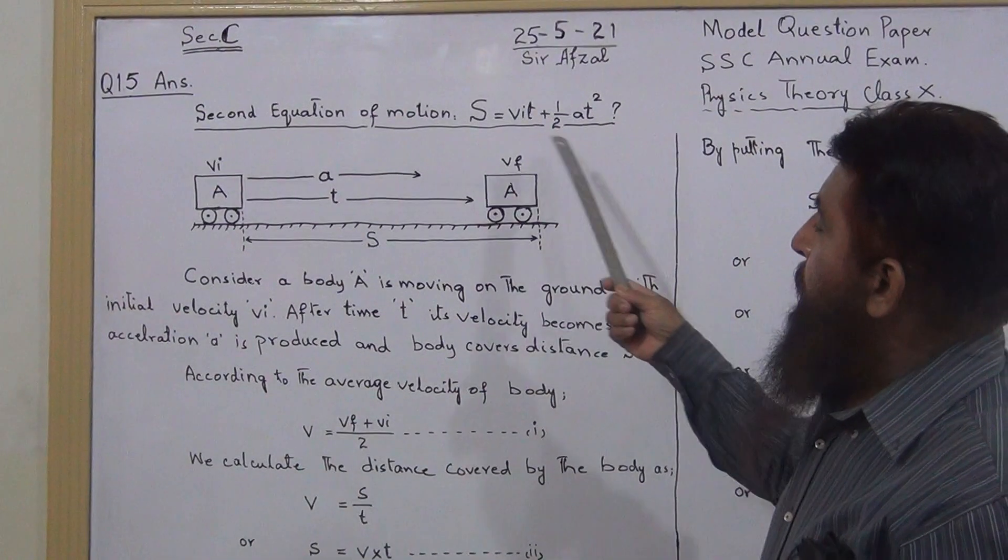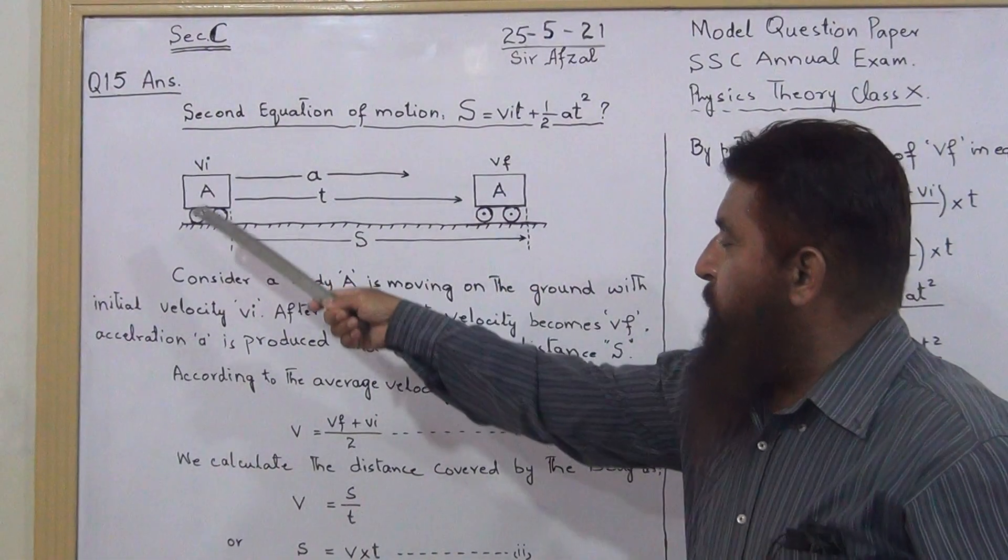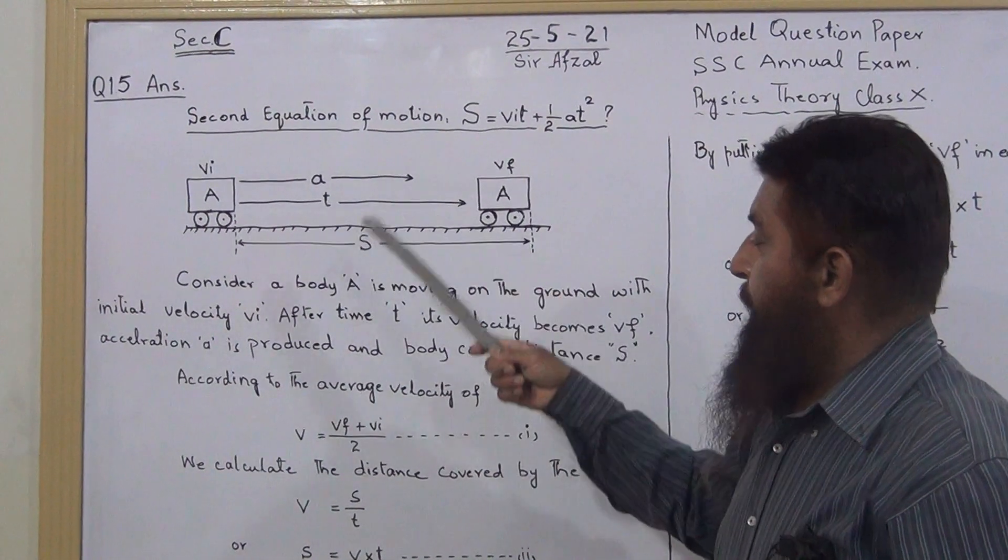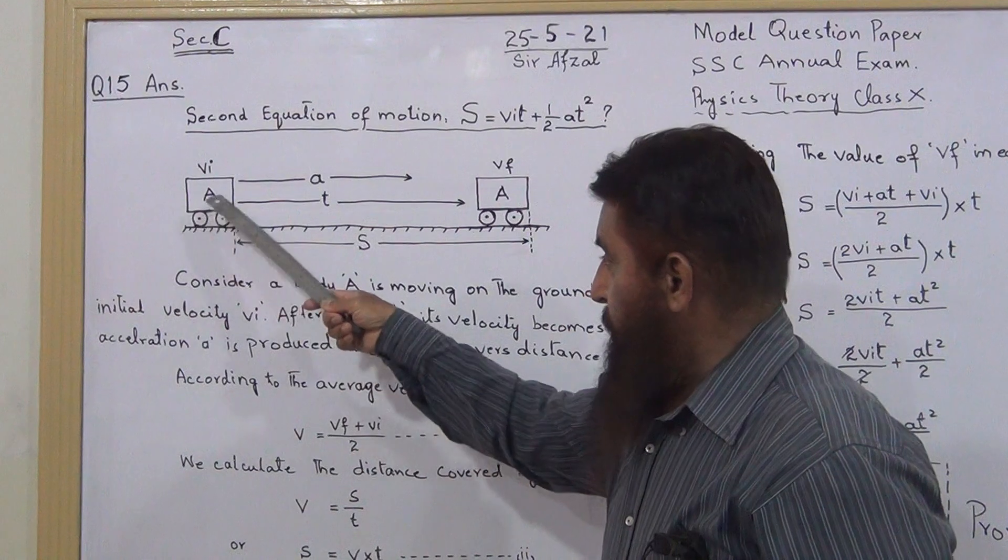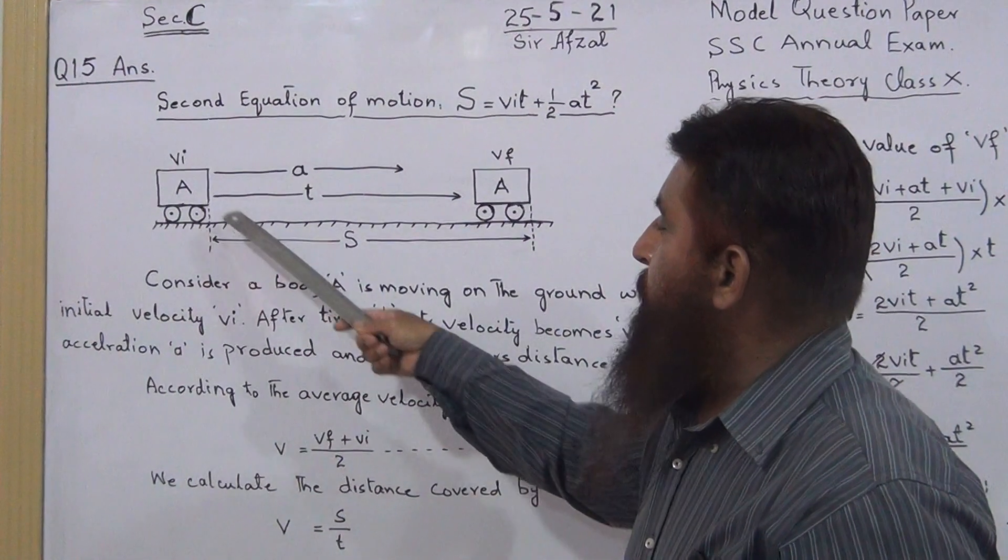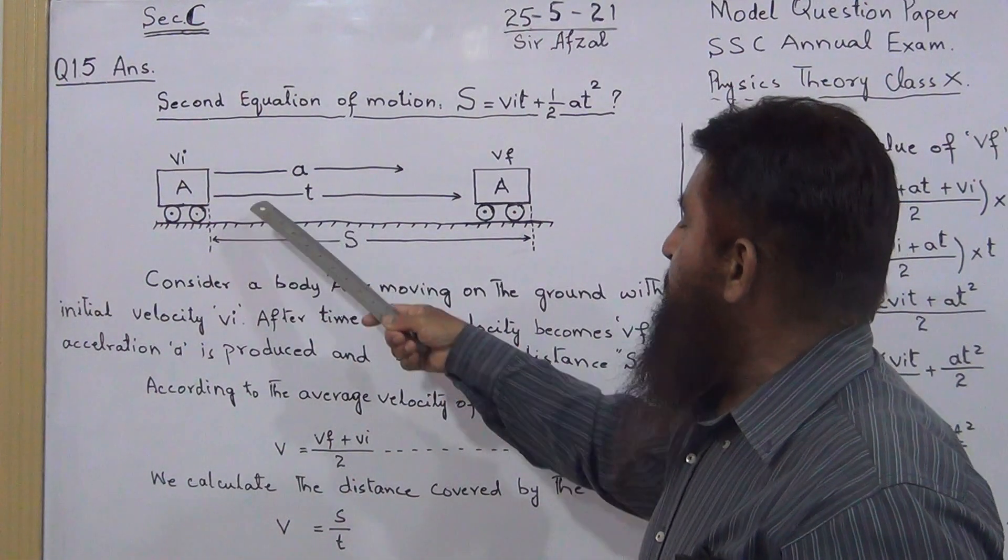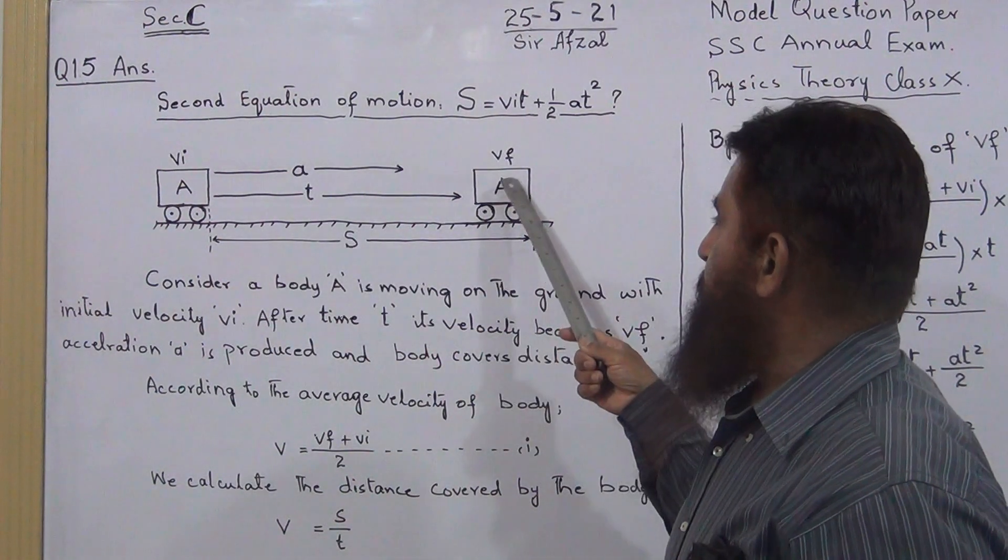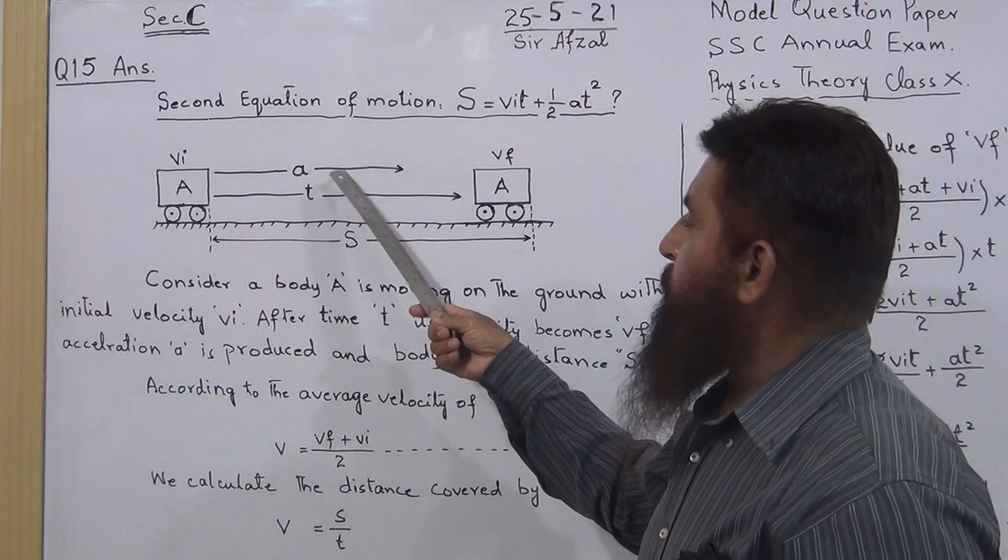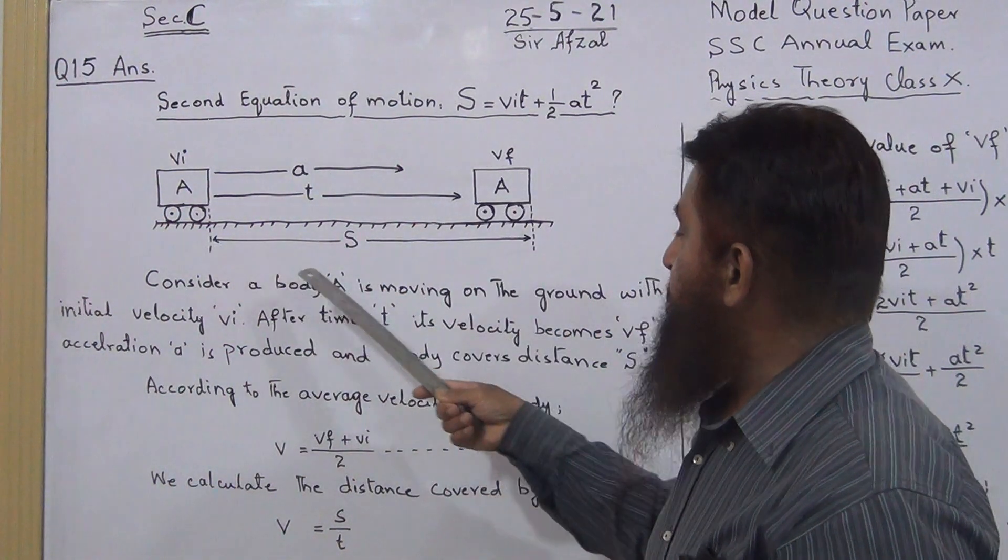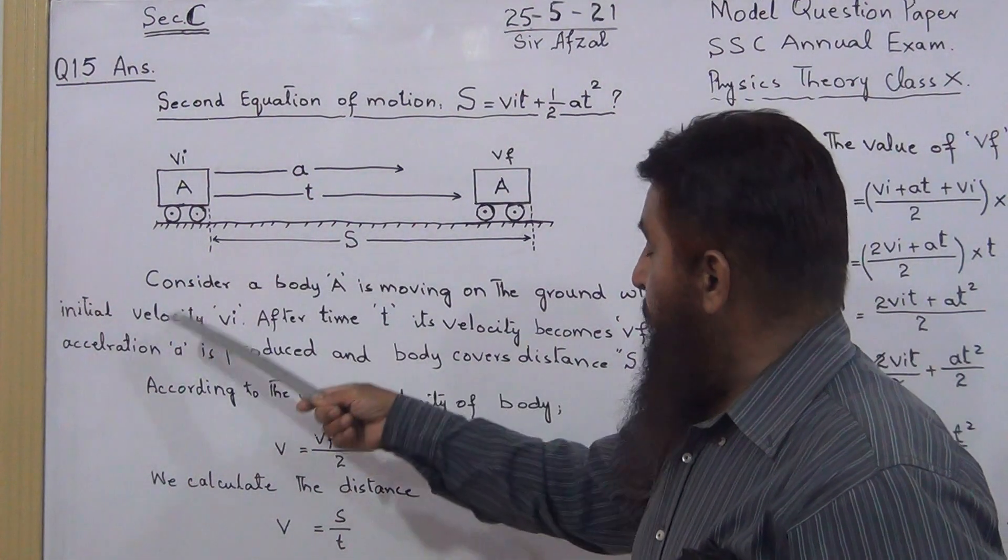For its proof, first of all you have to draw the diagram and label it, then describe it. This is a body A moving on the ground with velocity VI. After time T, its velocity becomes VF and acceleration A is produced, and the body covers distance S.